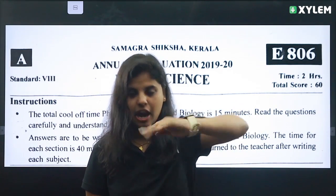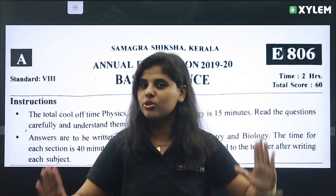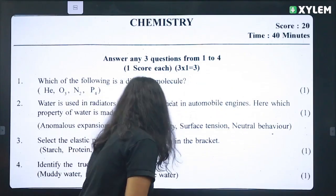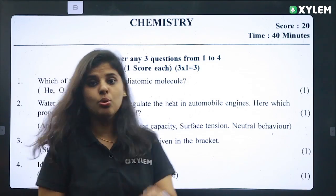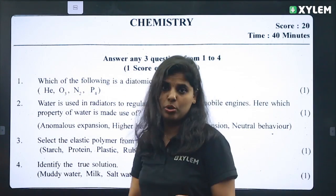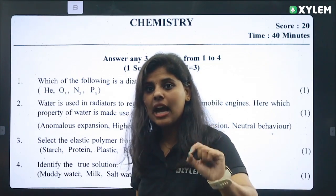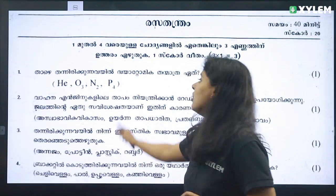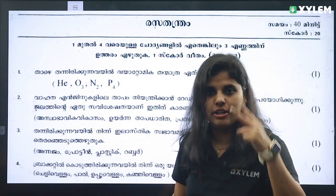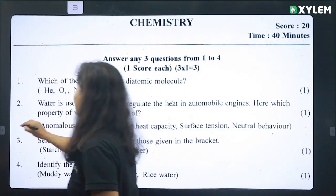We will discuss the first question paper. So, first question: Why are you going to ask the first question? Which of the following is a diatomic molecule? In this case, R is a diatomic molecule. It is two words — 'di' means two. Now let us know how simple it is.